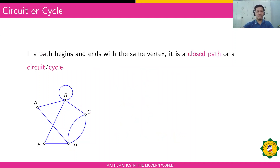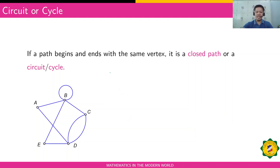The second term is what we call a circuit or cycle — it's actually a closed path. The difference from a regular path is that a circuit begins and ends with the same vertex. So the starting vertex and the ending vertex are the same in a circuit.